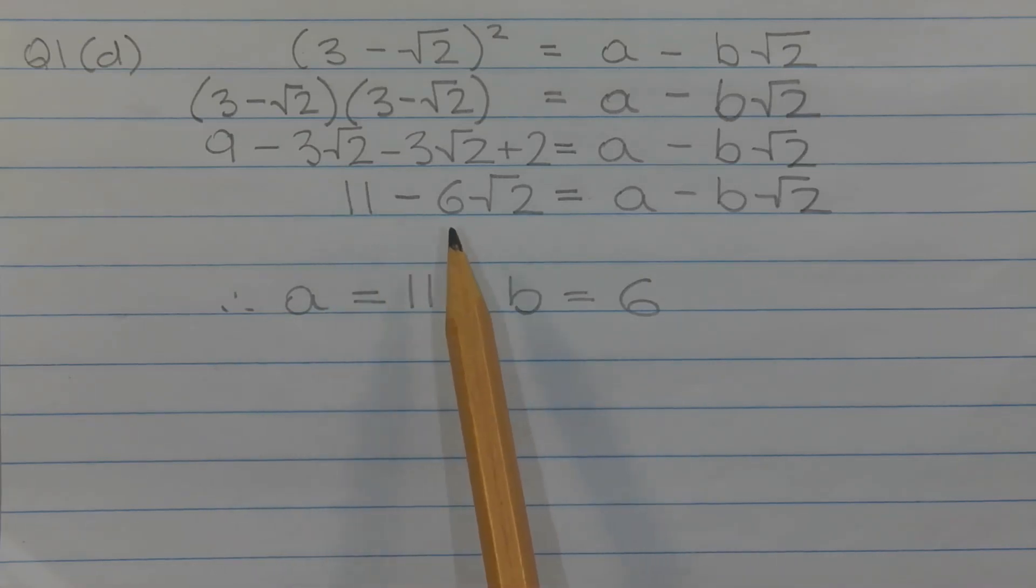Now, 11 minus 6 root 2 is equal to a minus b root 2. Notice the format on the right-hand side is identical to the format on the left-hand side.